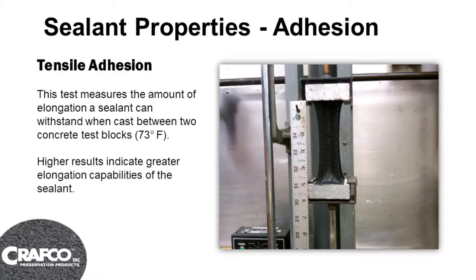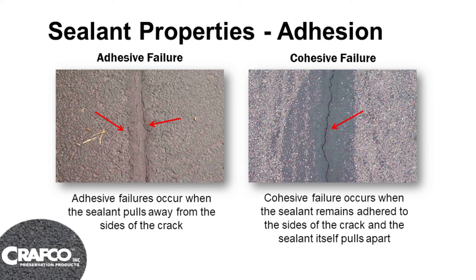The other adhesion test is a tensile adhesion or elongation test. Same type of test, but on this one they just pull it once to failure. Typically you're going to see adhesion of about 400 to 600%, sometimes as high as 1,500% depending on the sealant. If somebody calls and says the sealant failed and cracked, I'm going to ask one question: where did it crack? Did it crack along the edge or down the center? If it cracked along the edge, that's an adhesion failure — it didn't adhere properly to the sidewall of the crack in the asphalt, typically an installation error where it didn't get clean enough to get good bonding.